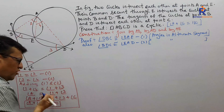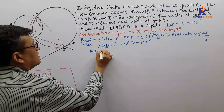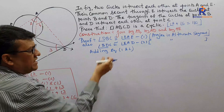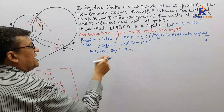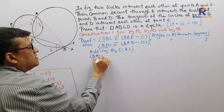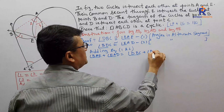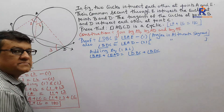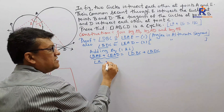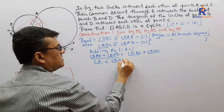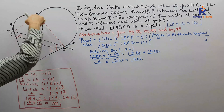Now adding equation 1 and equation 2, taking the RHS of one as LHS: angle BAE plus angle EAD equals angle DBC plus angle BDC. Now what is angle BAE plus angle EAD? This is nothing but angle A. So angle A equals angle DBC plus angle BDC. You can also write angle BAD instead of angle A.